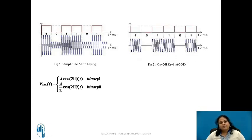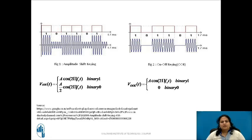ASK can also be represented in another form where 1 is represented by a high frequency sinusoidal carrier and 0 is represented by no signal — that is, the presence and absence of the carrier with respect to 1 and 0 of the input data. This type of ASK is known as OOK, that is on-off keying. The mathematical expression for on-off keying states that during the bit slot, the output is A·cos(2π·fc·t) if the data bit is 1, and 0 if the data bit is logic 0.